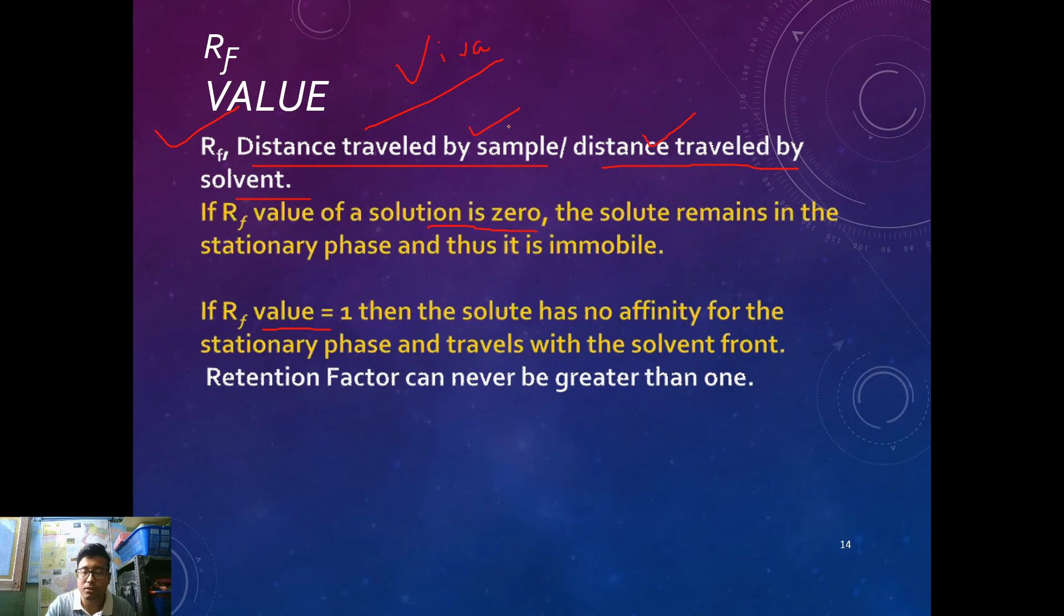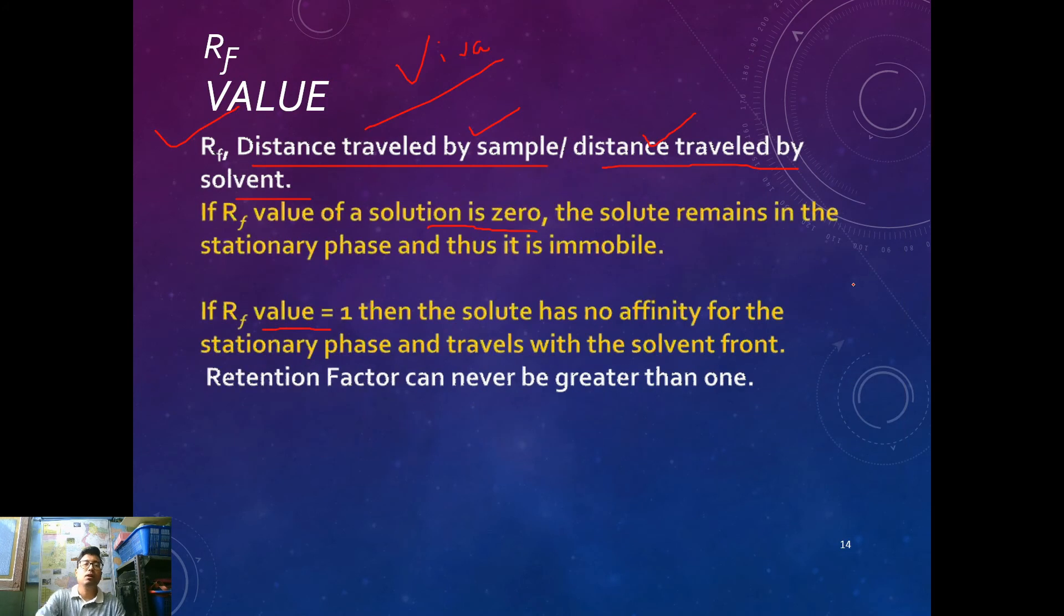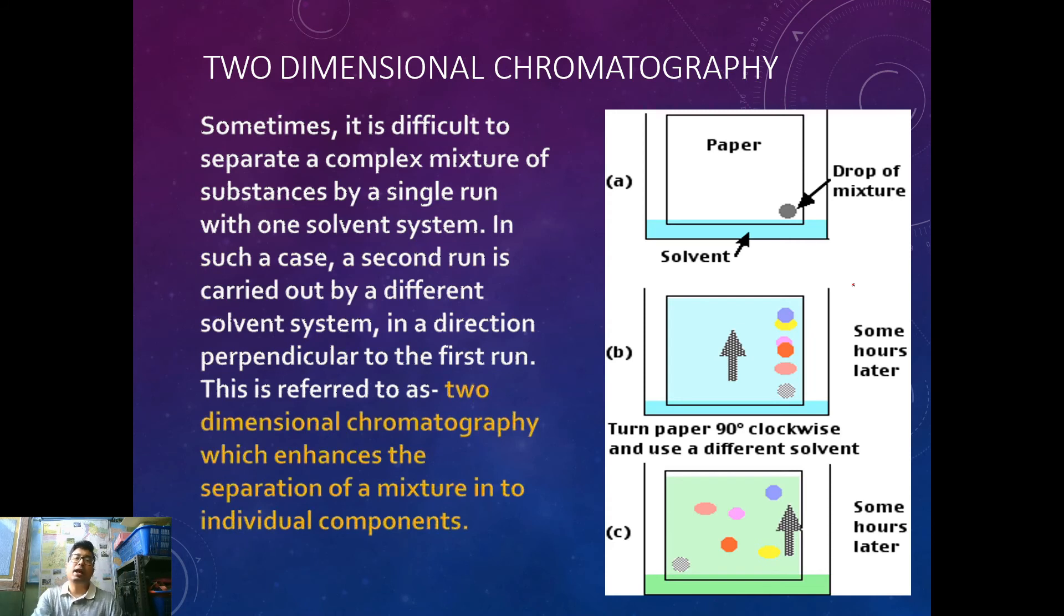This is the solvent front, up to which solvent has traveled, but the solutes will stop here, here and here depending on their interaction with the stationary phase. Ratio of this to the whole thing will be the RF value of the blue spot. This RF value is very important.